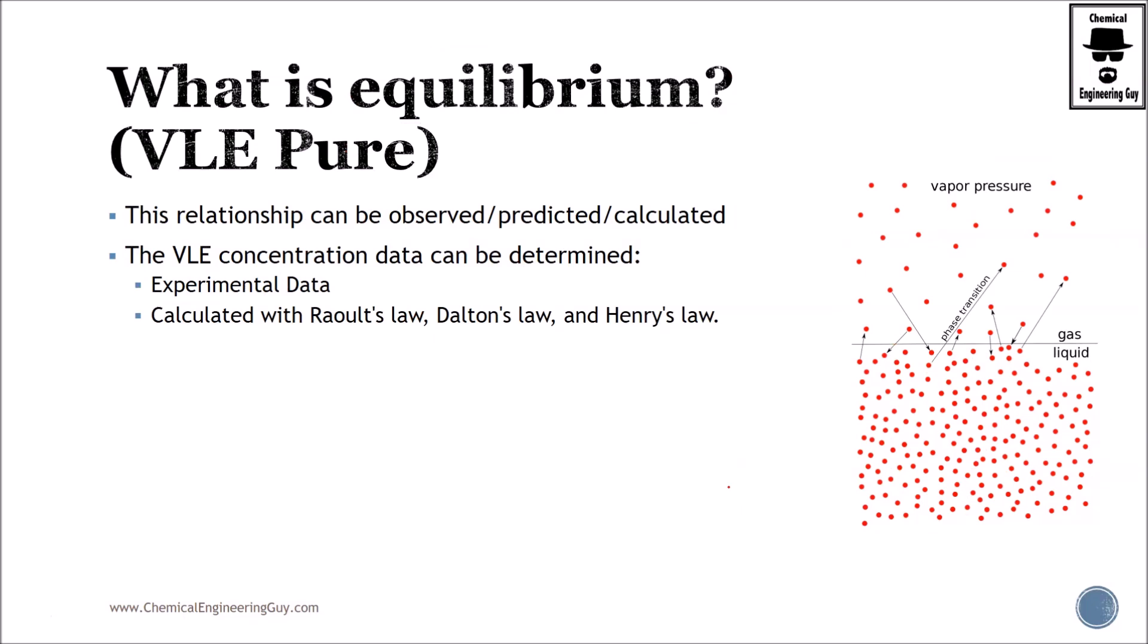This relationship can be observed, predicted, and calculated. So that's great. Once you start doing your experiments, you can obtain that value. You can also predict them with the data given in plenty of experiments, or if you already have the value, you just simply calculate it. We're going to see how to calculate that later on.